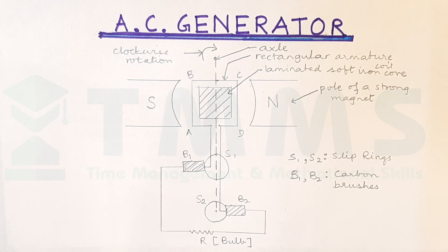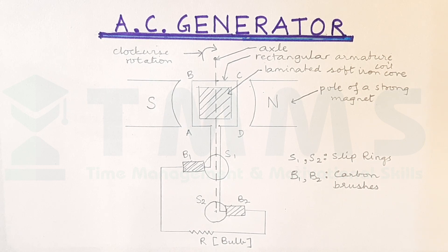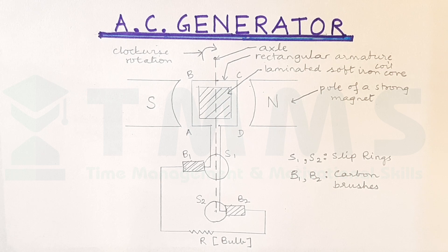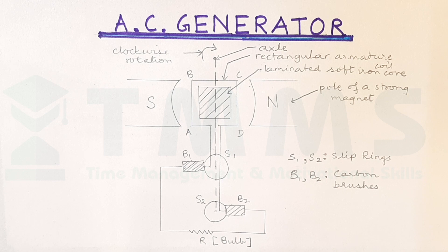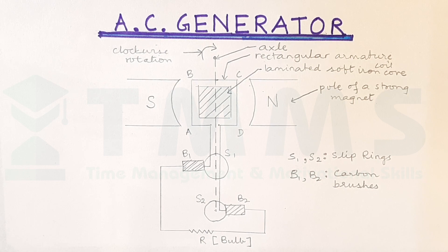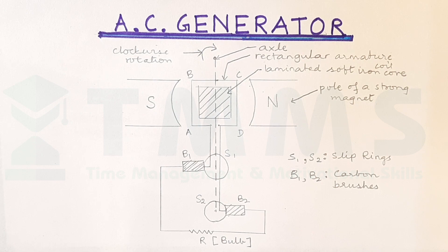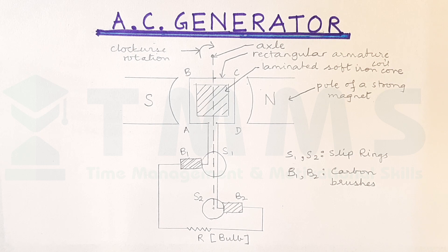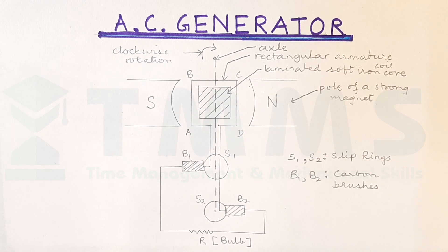AC generator. Today, we are going to learn to draw this AC generator, that is alternating current generator, fast, in about 2 minutes. This is a very important question in electromagnetic induction. In this video, you will be taught how to draw this AC generator step by step.